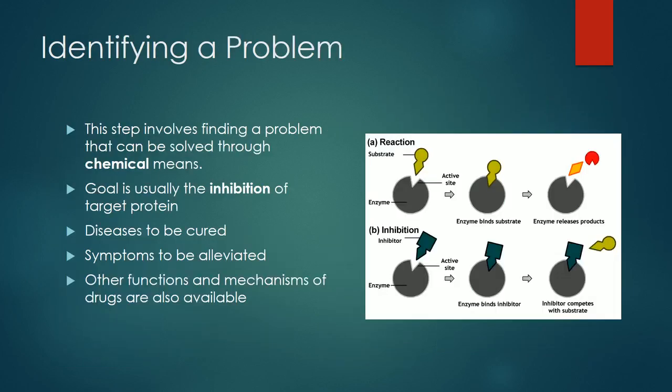Identifying a problem is the first step in drug creation, and it focuses on finding a question that can be answered through chemical means. Usually, once a disease-related protein has been found, efforts focus on inhibition of the protein. The figure to the right is an example of competitive inhibition, in which a chemical that has a similar shape but does not react with the protein is used to block the reactive substrate. Other functions and methods of drugs are available; however, this is the most common.